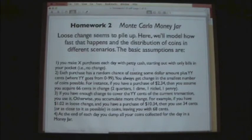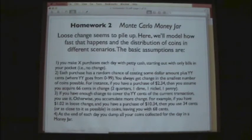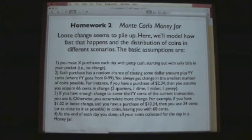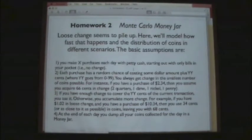Homework two is essentially a Monte Carlo simulation. When in Monte Carlo, you should be thinking about money. The idea: we walk around all day and pay for stuff with cash. You have a random chance of the final bill being between 0 and 99 cents. The question is: at the end of the day, after X number of transactions, how much change are you accumulating? We want to know the distribution of coins in your money jar at the end of the year.